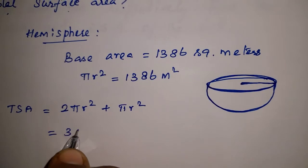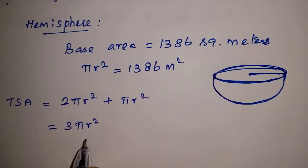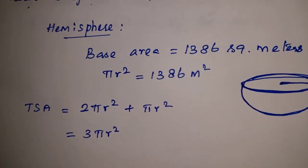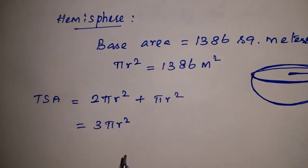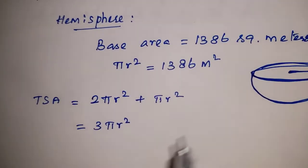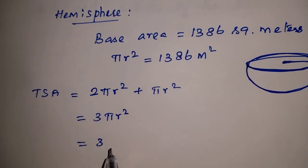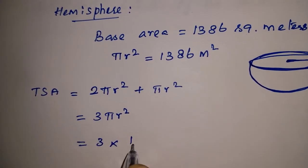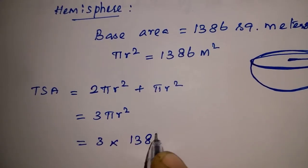Of course, we will do this here. Let's calculate the total surface area. Total surface area is 2πr² plus πr². So we substitute the value of πr², which is 1386.